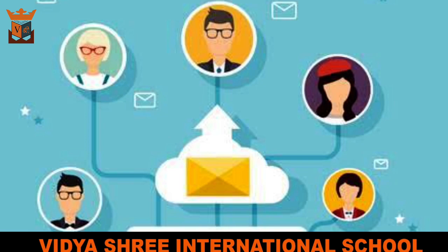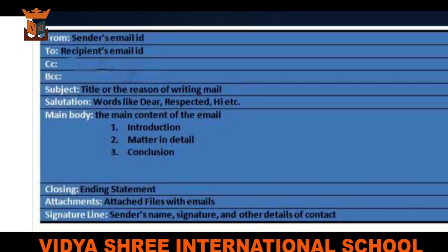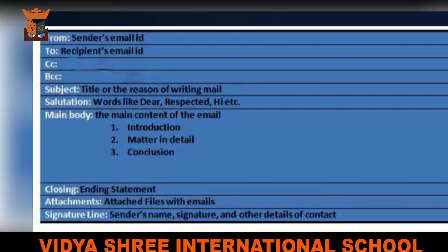Now let's discuss the format of email writing. First, type your email address. Second, type the email address of the recipient. Third, CC means carbon copy and BCC means blind carbon copy — use these functions if you want to send the same message to people other than the primary recipient.